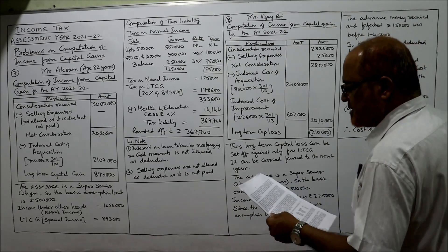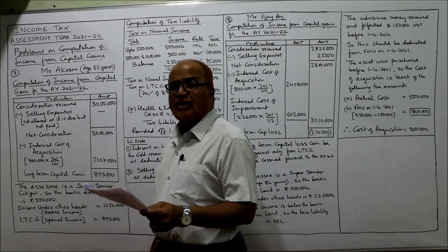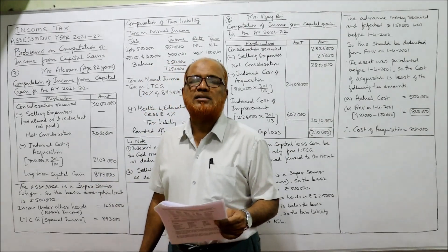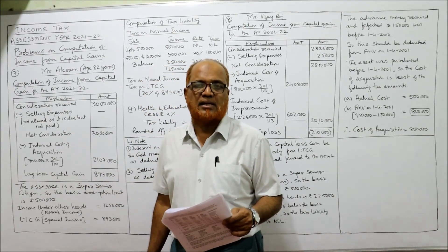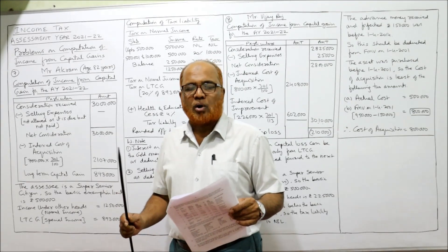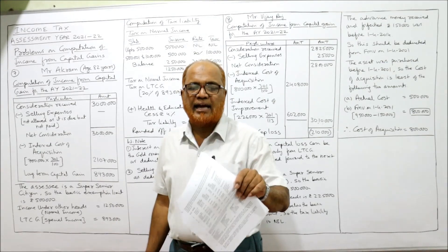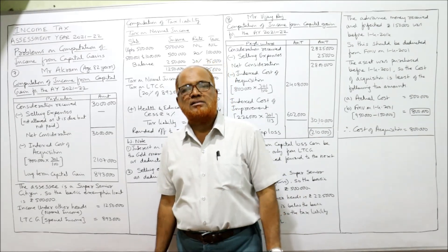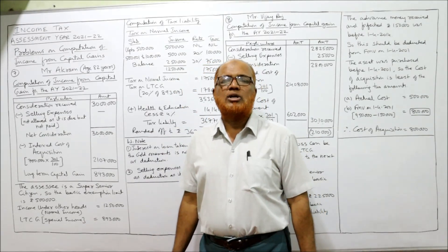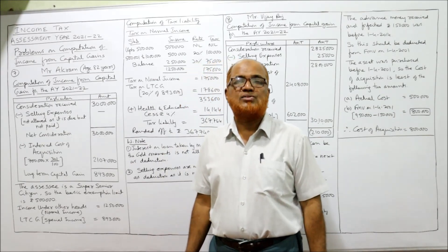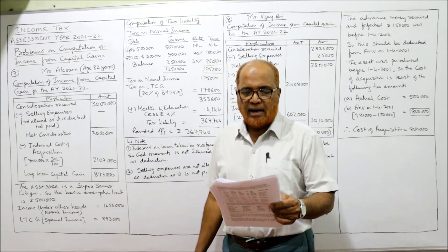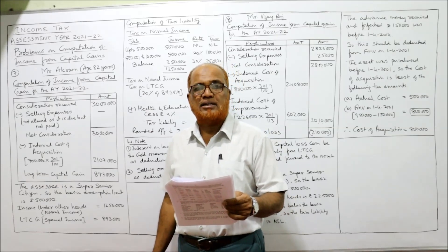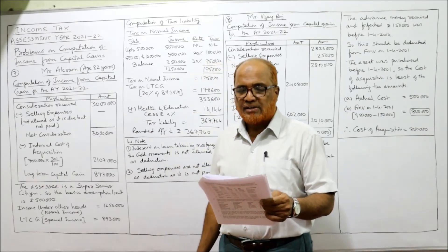See the seventh problem. Mr. Akrab, age 82 years — 82 years means super senior citizen. If any person crosses the age of 80 years, he is called a super senior citizen, and the basic exemption limit for a super senior citizen is 5 lakh. He purchased gold ornaments on 10th March 1998 for rupees 7 lakh.